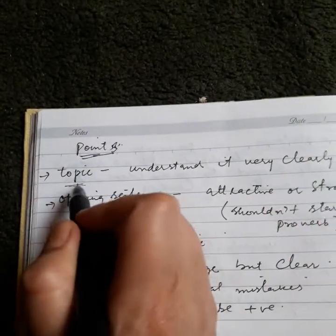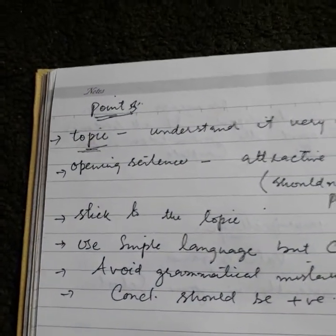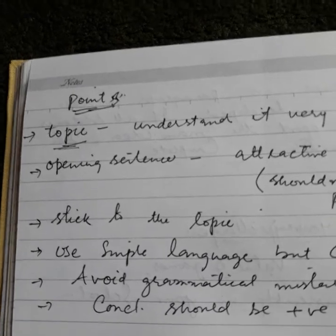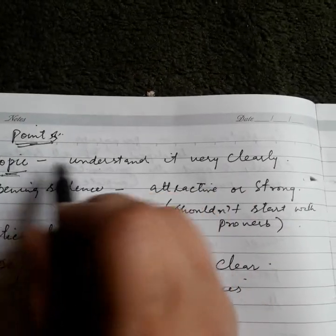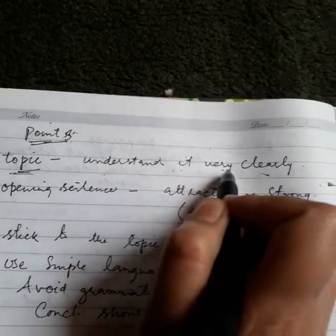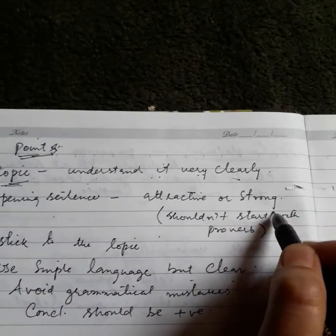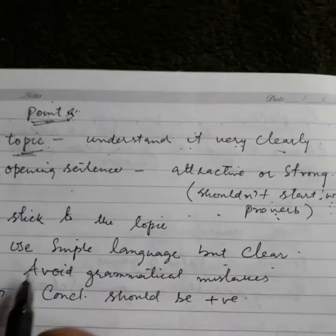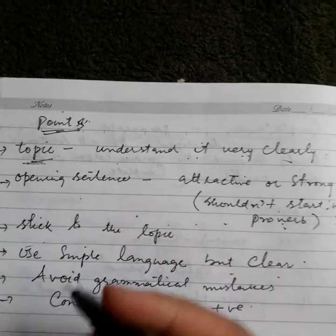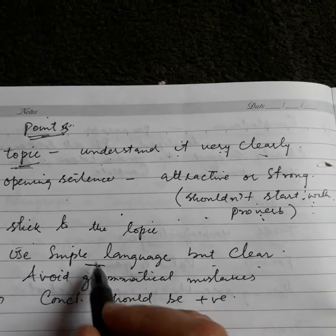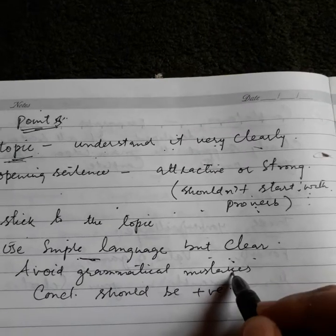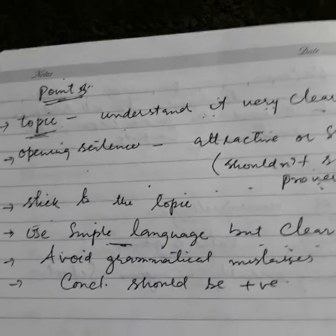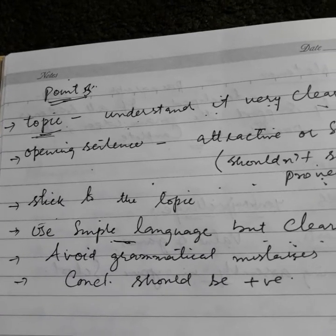First, know your topic well — like for Trees, you should know what trees are, what they give us, what we are doing, and what we should not do. You have to understand the topic very clearly. Then the opening sentence should be attractive and strong, and it should not start indirectly. Focus on the topic and use simple but clear language. Avoid grammatical mistakes — when you are writing, take care that there are not too many grammatical errors.